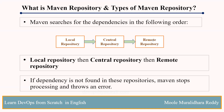Majorly, most organizations maintain their own repositories. That's why they store dependencies in remote repository. Instead of taking from central repository, they store it in remote repository and use it from there.